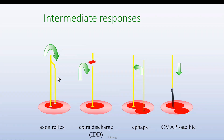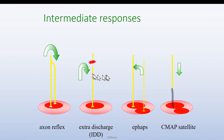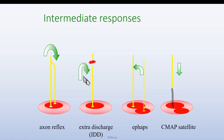This axon reflex situation is not very common at all. More common is a hyperexcitable area in a nerve axon. Another possibility is ephaptic transmission from one nerve axon to another axon. When we stimulate, the signal goes both out to the muscle directly and then up to the hyperexcitable zone and then out again as a later component.